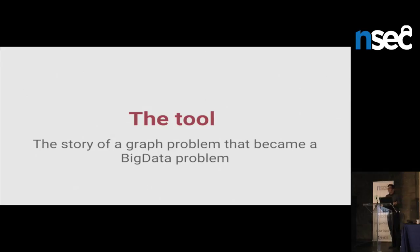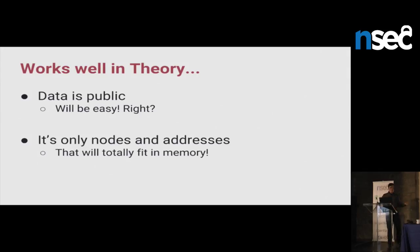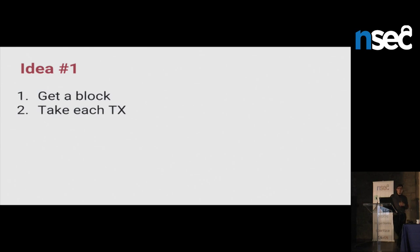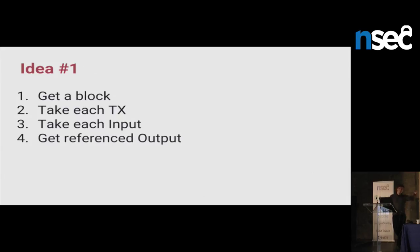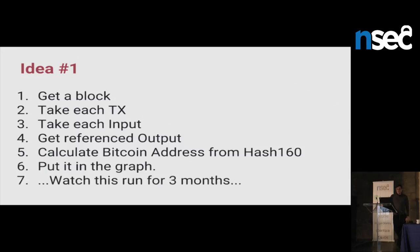Now the funny part. I came with a graph problem and said, 'Oh, that will be complicated.' But actually the graph problem took me a day and a half. The big data problem took me until last week to figure out. It works well in theory — the data is public, you can download the blockchain from the internet. It's easy, it's public, and it's only nodes in memory — just arrays of bytes and integers, so it should totally fit in memory. I have more than enough memory. Well, I was wrong, as you can imagine. Idea number one: get a block from the blockchain, take each transaction, take each input, get the referenced output to get the hash160, calculate the Bitcoin address, put it in the graph. And finally, watch it run for three months. Flip tables.